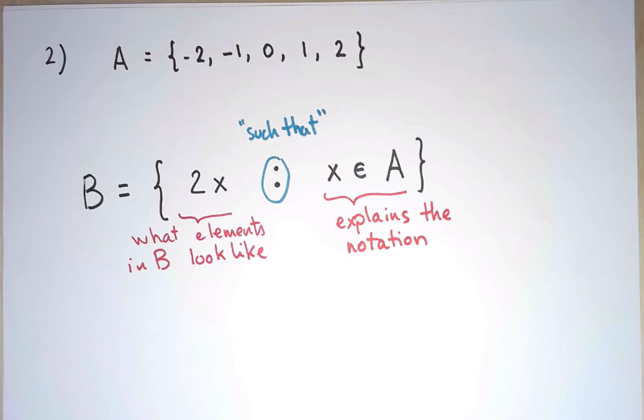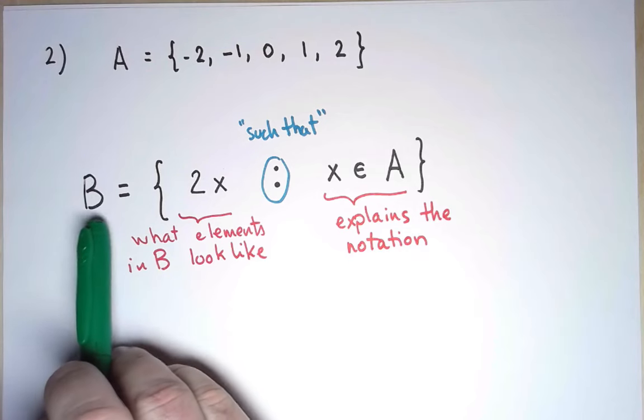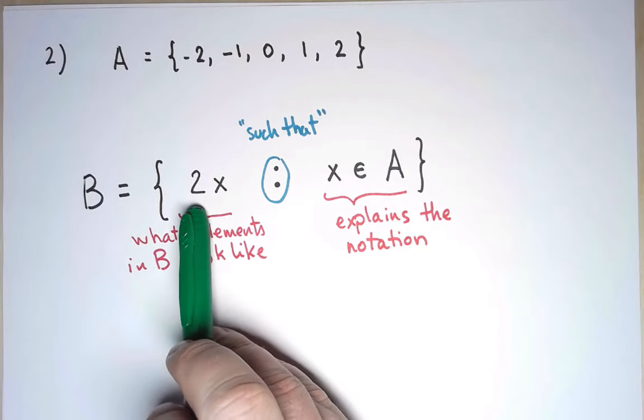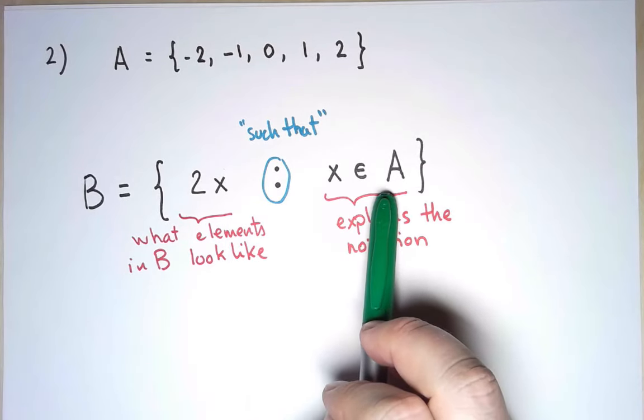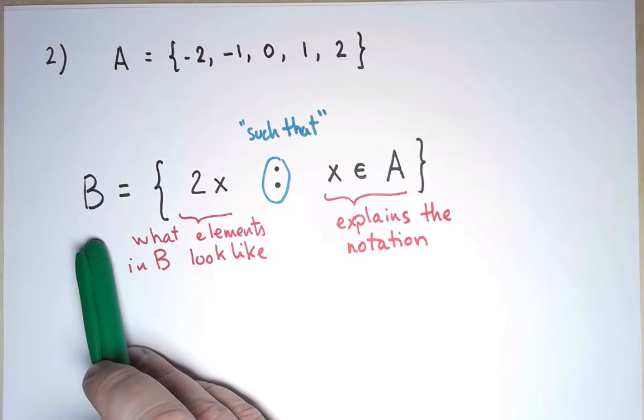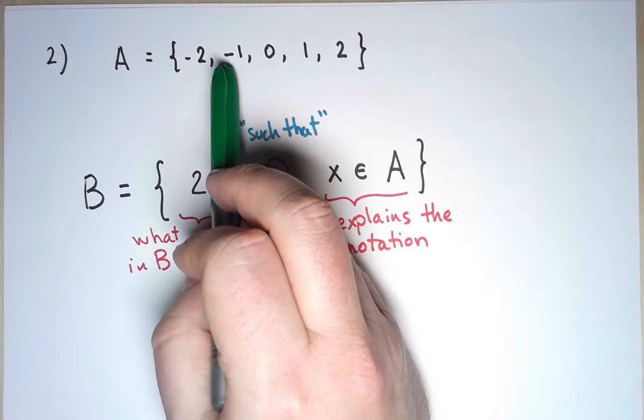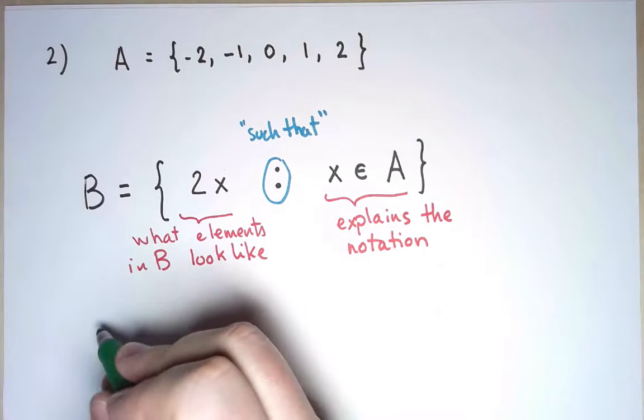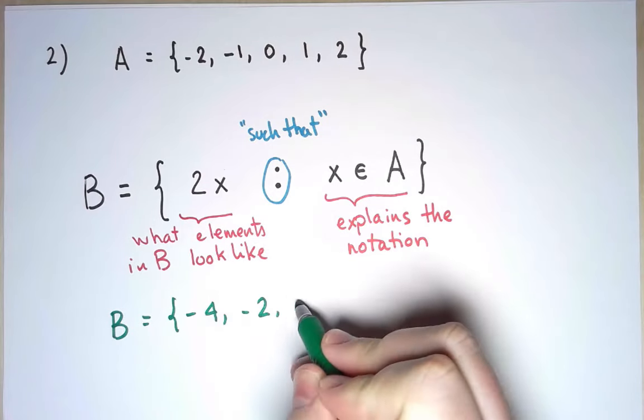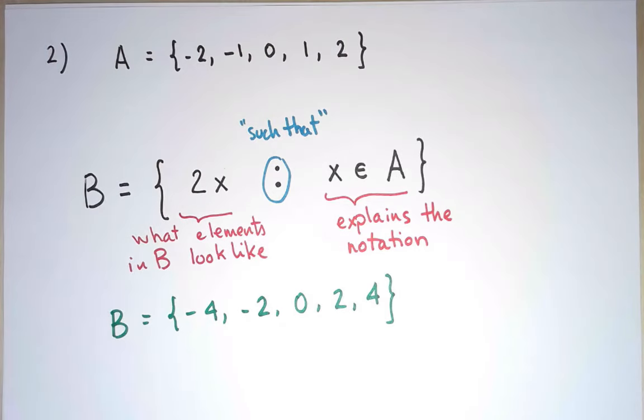How do I read this sentence? Well, it says that B is the set of elements of the form 2x, such that x is an element of A. In other words, B consists of any element which is 2 times an element in A. Well, since those are the elements in A, 2 times one of those will give me the set, and that's the set I just described.